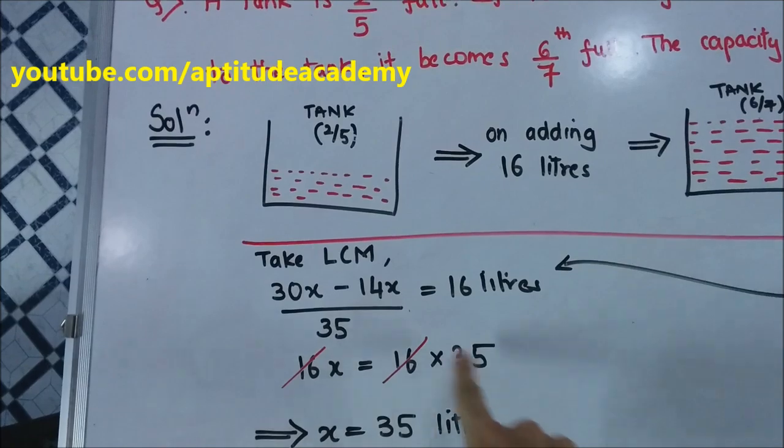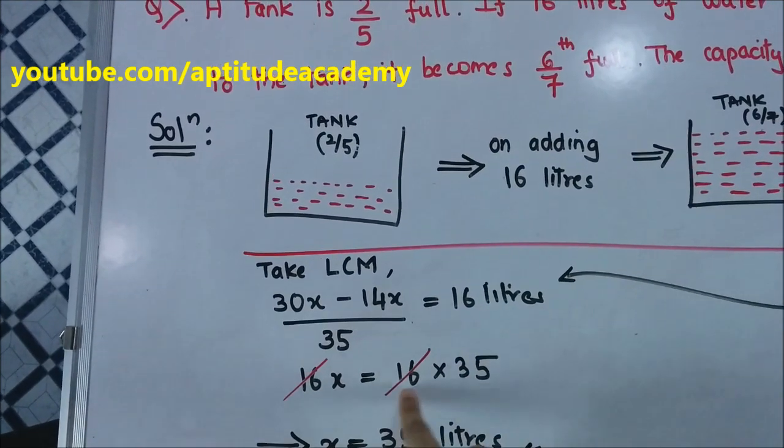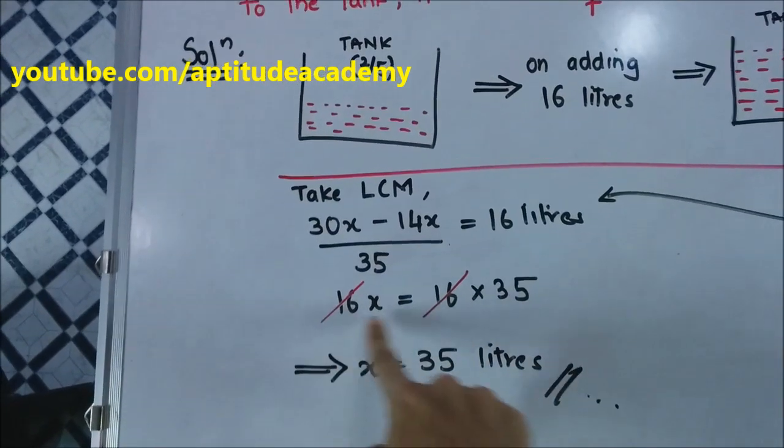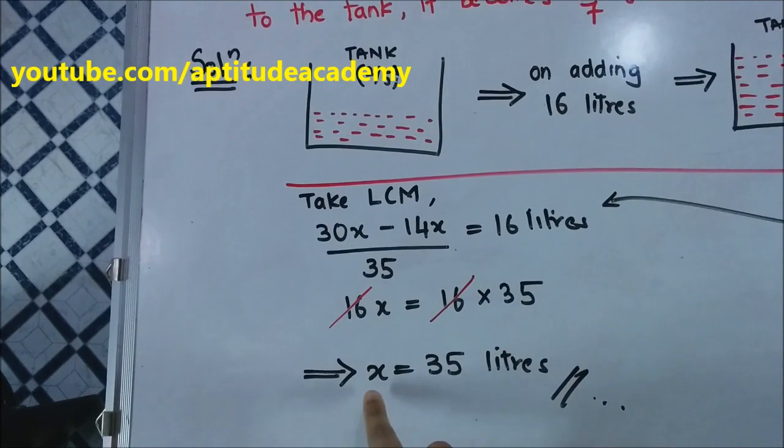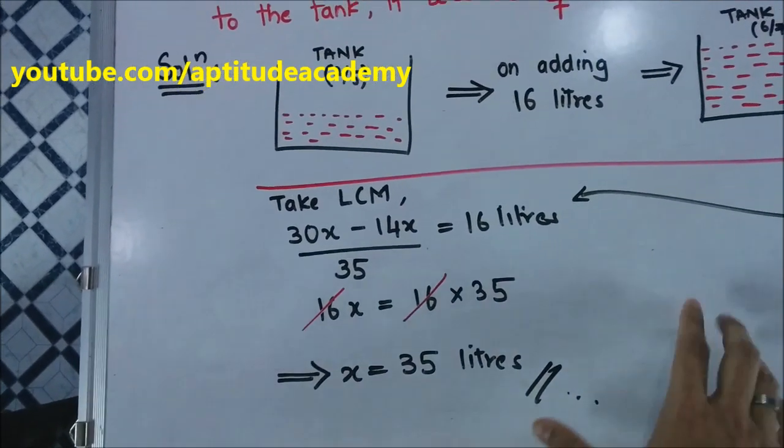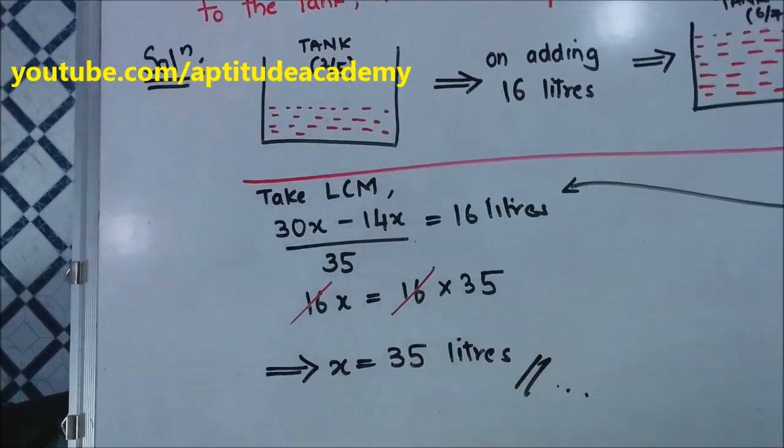16x is equal to 16, and if you multiply this 35 here, it is 16 into 35. Now cancelling 16 and 16 on both sides, what remains is x is equal to 35 liters. That is the total capacity of the tank. Thank you.